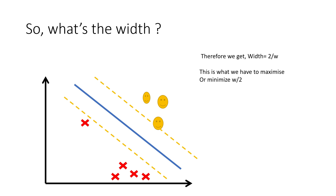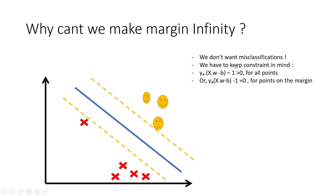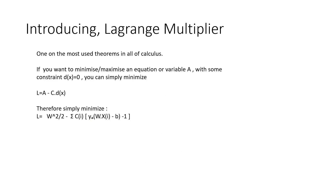Here's the key question: since we want as large a width as possible, why not make it infinite? We could, but we have constraints — we don't want misclassification. So we must simultaneously maximize the width and satisfy the constraint equation: y_a · (x·w − b) − 1 ≥ 0 for all points (equal to zero for points on the margin boundary). We have to do two things in parallel. Trying random margin values and checking the constraint each time is impractical. The solution is Lagrange's multiplier.